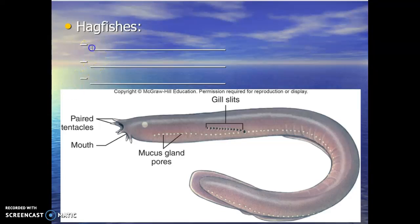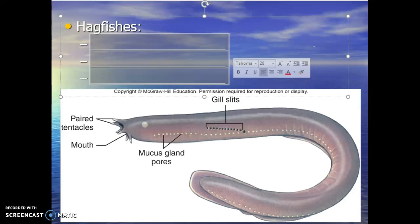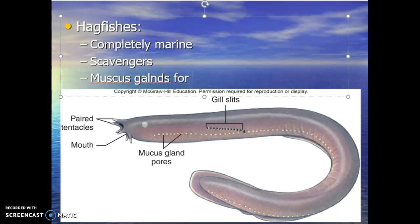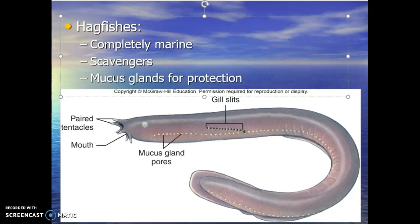Within Agnatha, we have the hagfish. Hagfish are completely marine — we do not see hagfish in fresh water. These guys are scavengers. They use those tentacles to find food, suction on, and scrape, rip, and tear, twisting their body to feed off of basically dead decaying material. Hagfish have mucus glands and secrete a slimy mucus that helps give them protection — if a predator tries to eat them, it gets a mouth full of mucus.